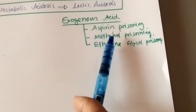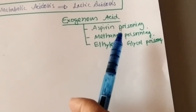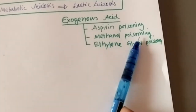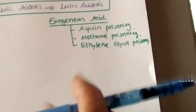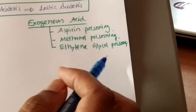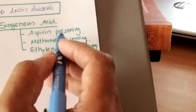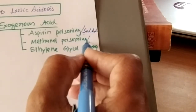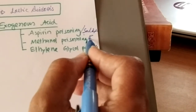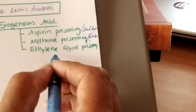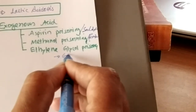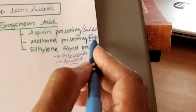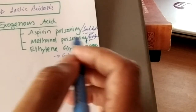Exogenous causes include poisoning with substances of an acidic nature — aspirin poisoning, methanol poisoning, and ethylene glycol poisoning. In MCQ exams, these may appear as salicylate poisoning. Methanol poisoning leads to formation of formate, and ethylene glycol poisoning leads to formation of glycolate or oxalate. These active metabolites — formate, glycolate, oxalate, and salicylate — lead to acidosis with high anion gap.